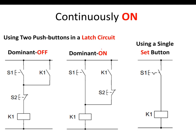From the problem description we learn that the system has to run continuously in oscillating motion, so we need to identify how to ensure the circuit runs continuously. There are a number of implementations: we can either use a latch circuit — whether dominant-off or dominant-on — or we can use a single set button.